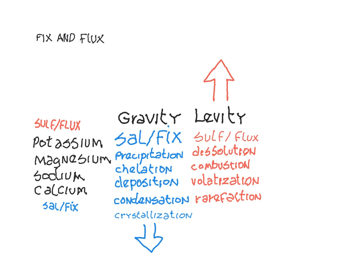These polarities can also be seen in the metals that are active in the changes from gravity to levity. On the sal-fix side is calcium and sodium, gradually moving towards more reactive magnesium and potassium in a sulf-flux pole. These metals are present in the mineral, the plant, and the animal kingdoms.